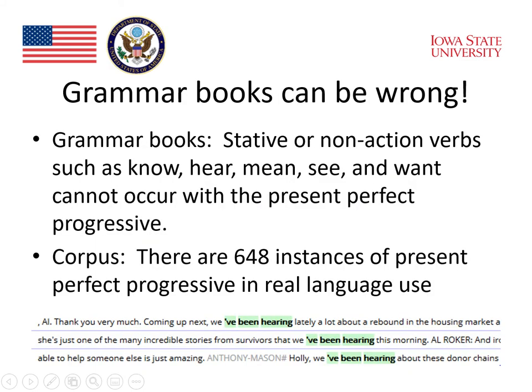By looking at real language use in a corpus, they were able to find a good example that shows how grammar books can be wrong. The grammar books reported that stative or non-action verbs such as 'know,' 'hear,' 'mean,' 'see,' and 'want' cannot occur with the Present Perfect Progressive. So the word 'hear,' according to the grammar books, is never used with the Present Perfect Progressive.